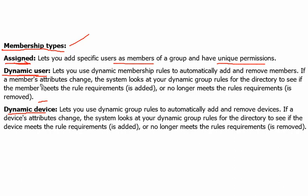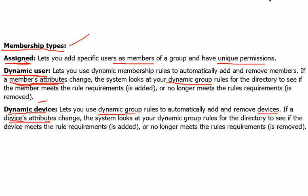Dynamic User membership lets you define dynamic membership rules to automatically add and remove members. If a member's attribute changes and matches the defined rule, that person is automatically added or removed from the group. Similarly, Dynamic Device automatically adds and removes devices from the group based on device attribute changes. Once a device attribute is updated or changed, the group automatically decides to keep or remove that device.